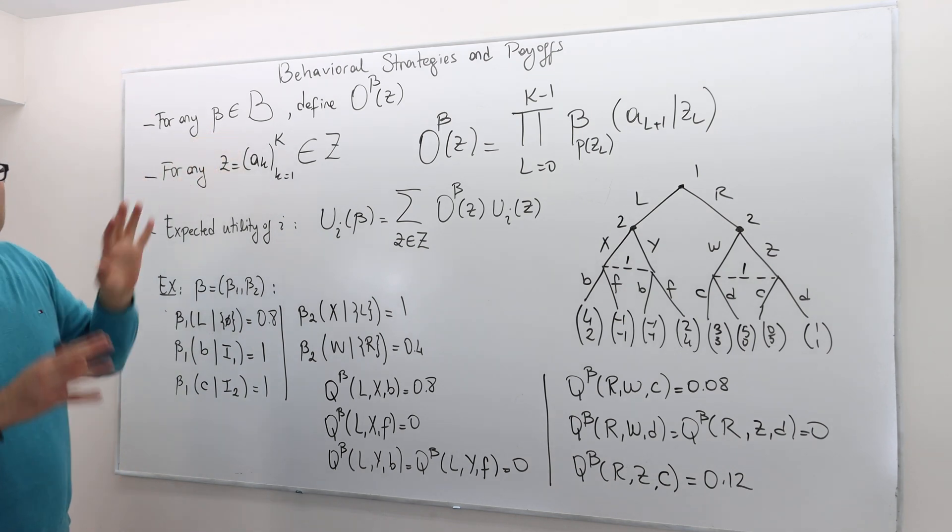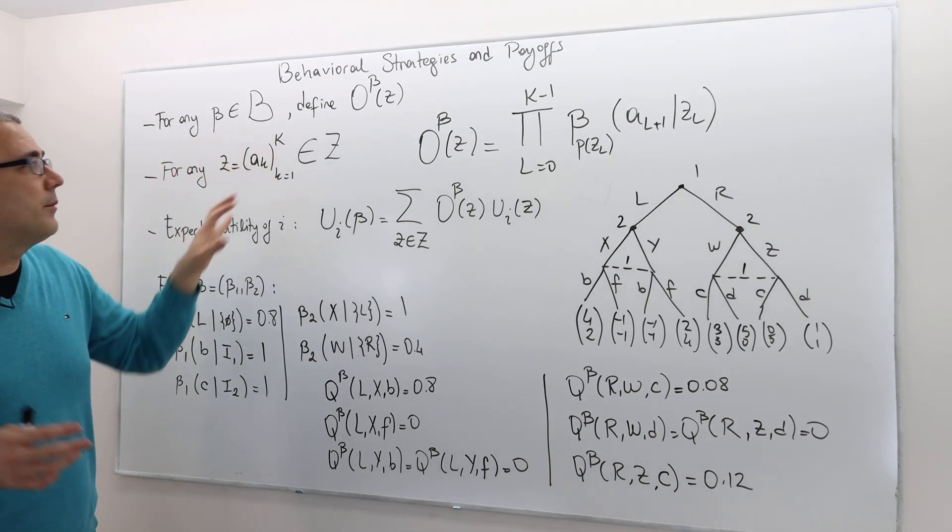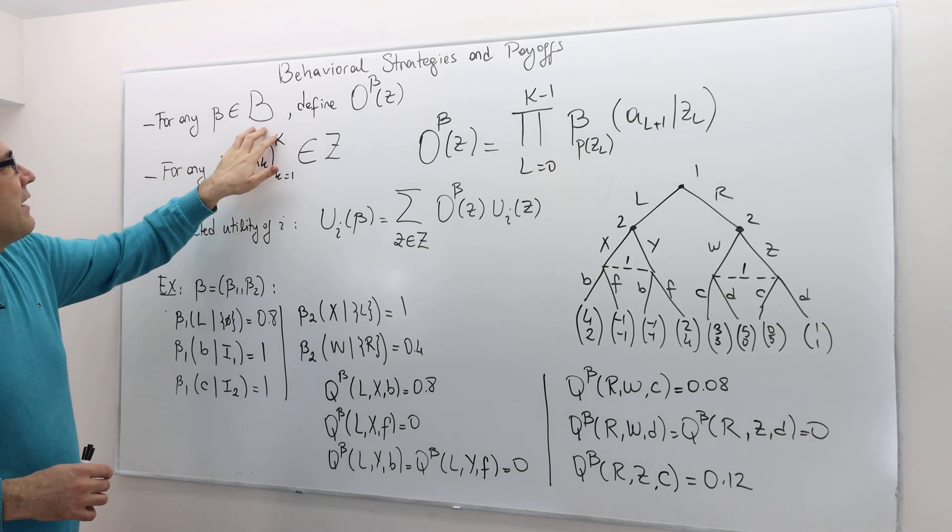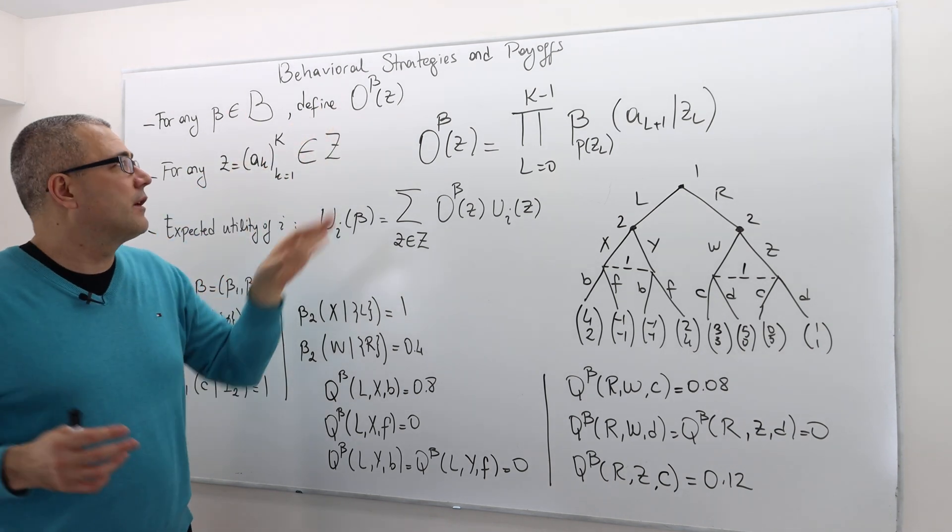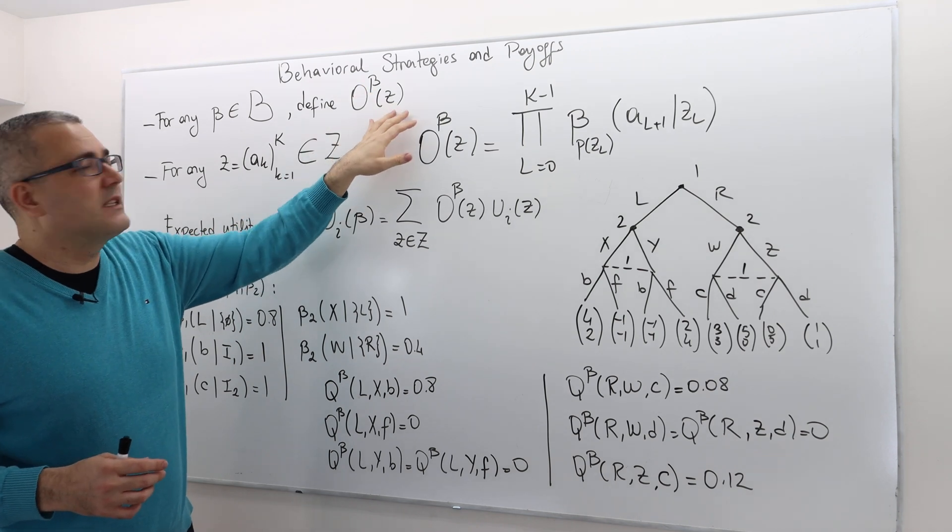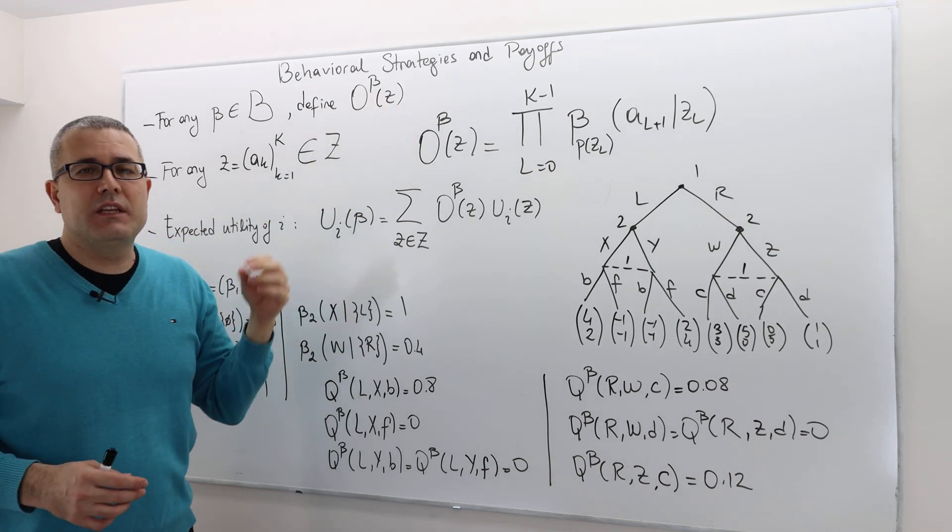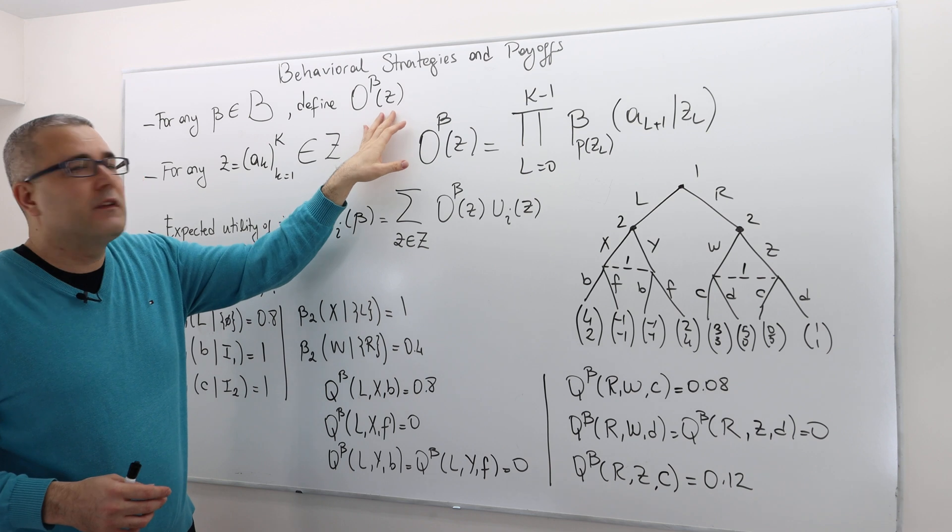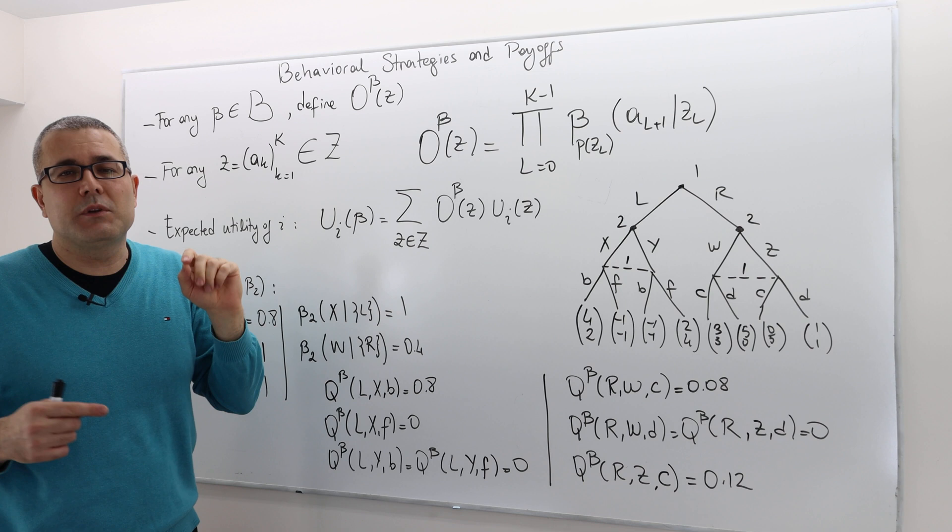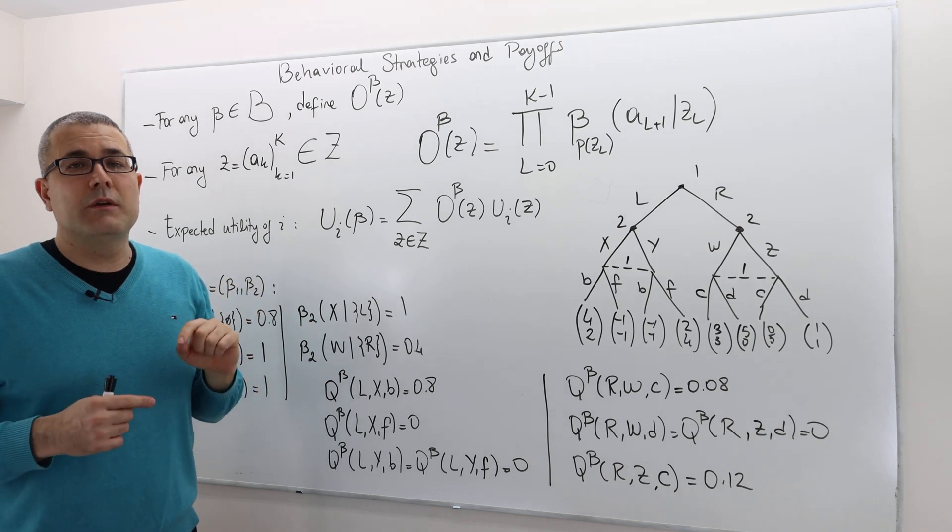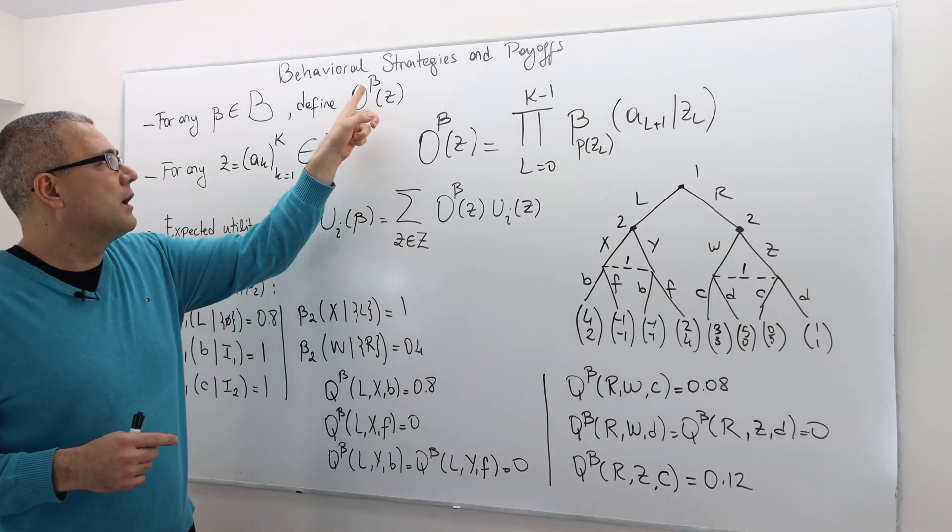Take any mixed strategy profile from this B set, and then we define the outcome function O(β,Z), which denotes the probability of the history Z occurring after the strategy profile, or if the players play according to the behavioral strategy profile β.